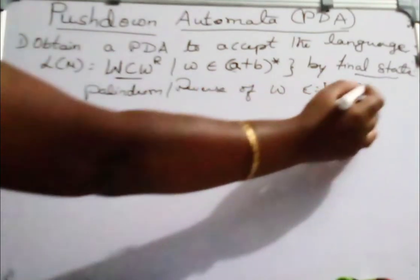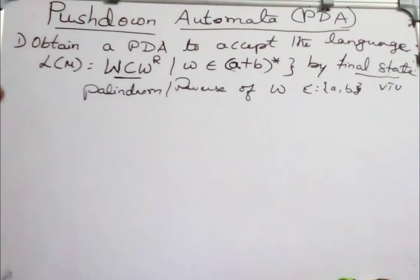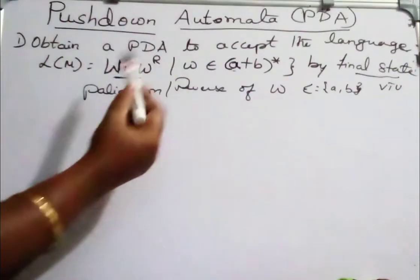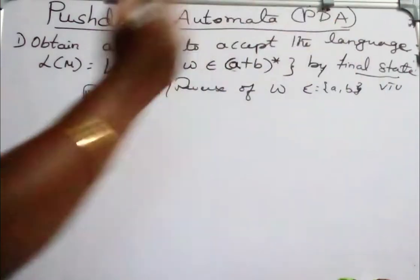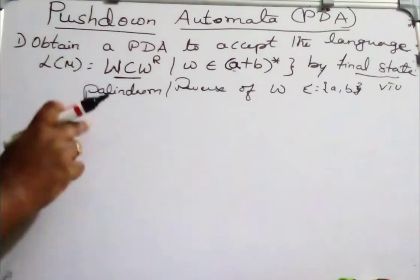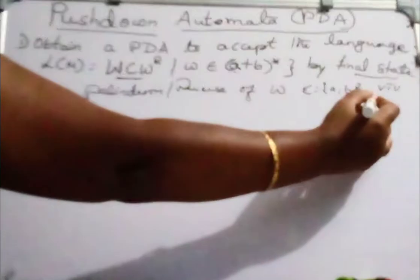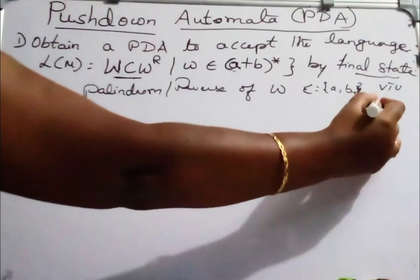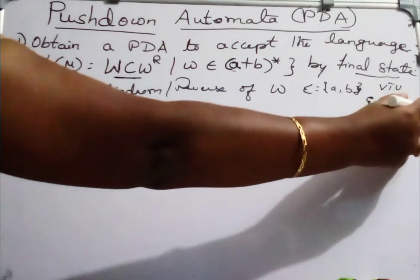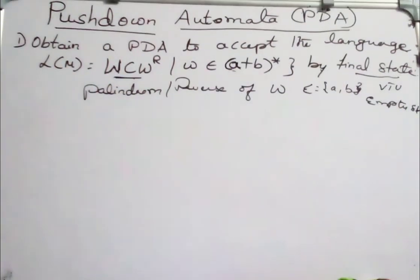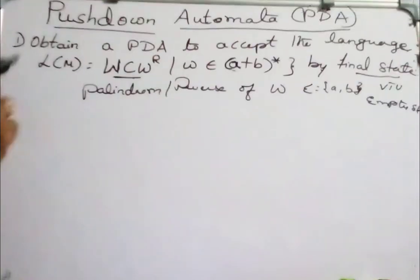This is a very important question for VTU exams. Here, acceptance of a PDA — that is palindrome, reverse of a string — by the final state method. The string can be accepted by an empty stack or by the final state method. In the previous video, I explained acceptance of a language by final state and empty stack — you can refer to that.